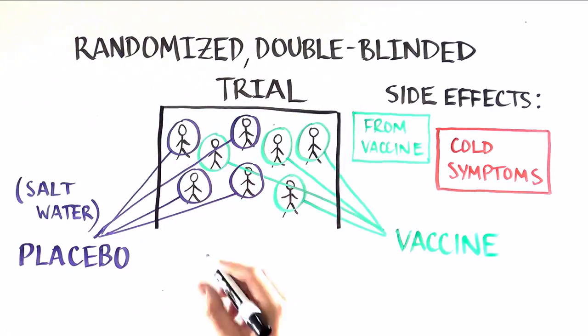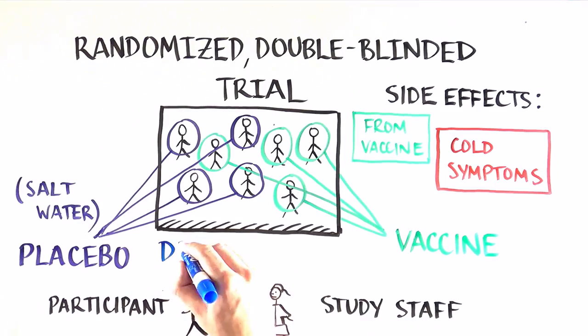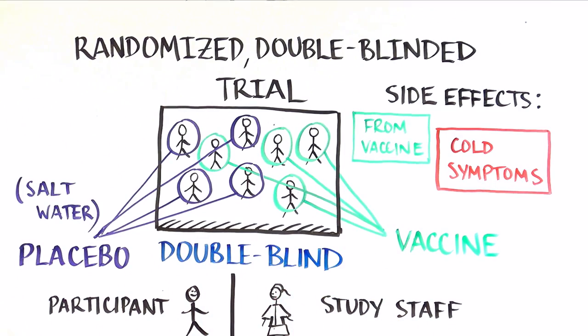And we double-blind, meaning neither the participant nor the study staff know who is getting which type of injection. That prevents both the volunteers and the staff from over- or under-reporting symptoms. We advise participants to tell us about everything that is happening to them.